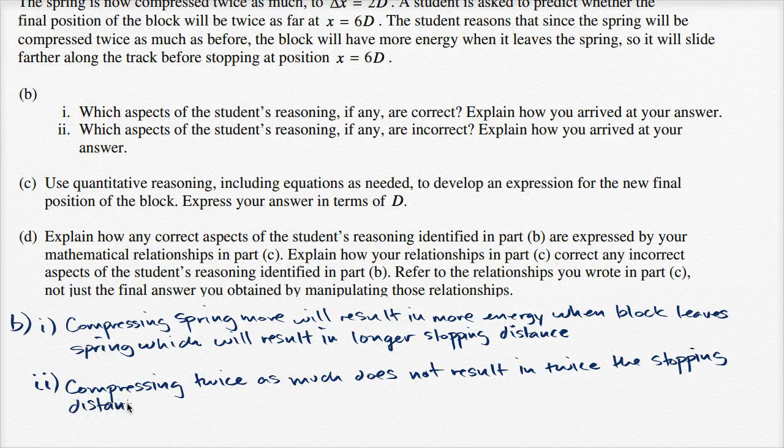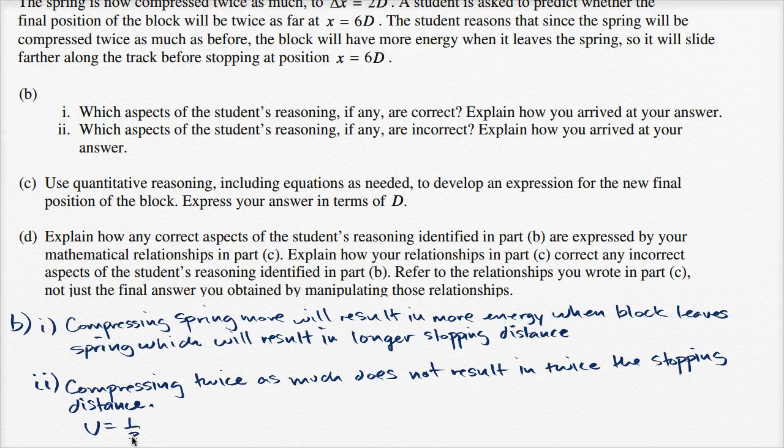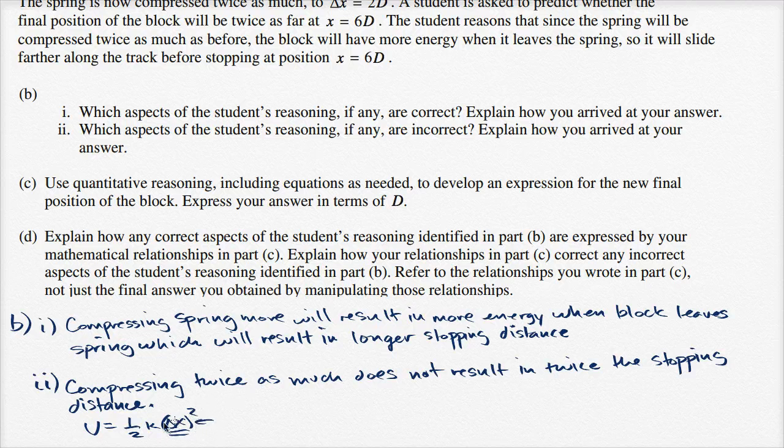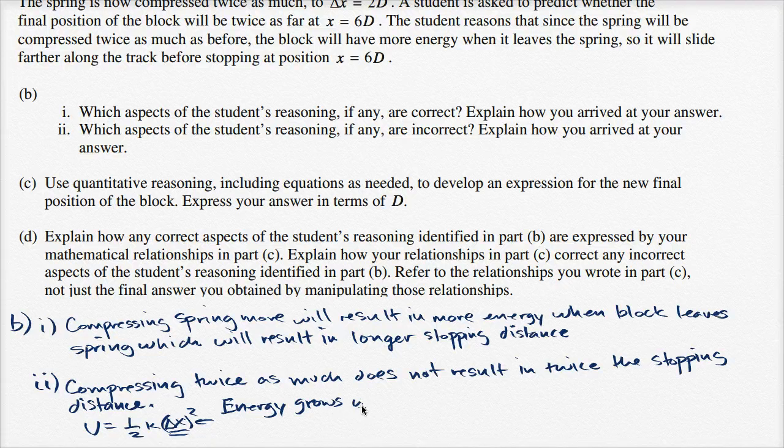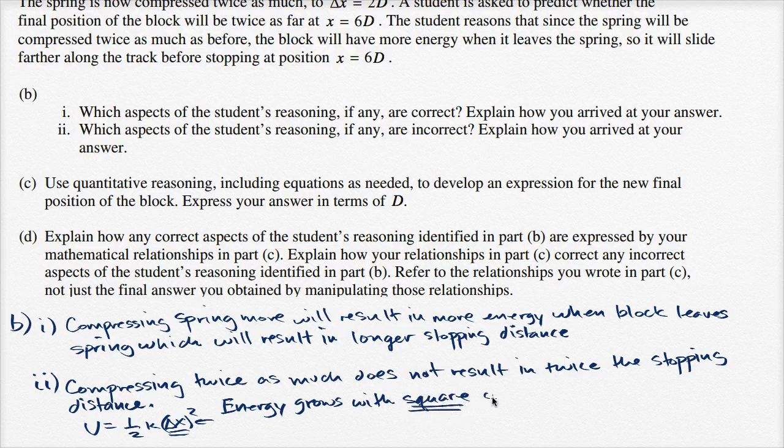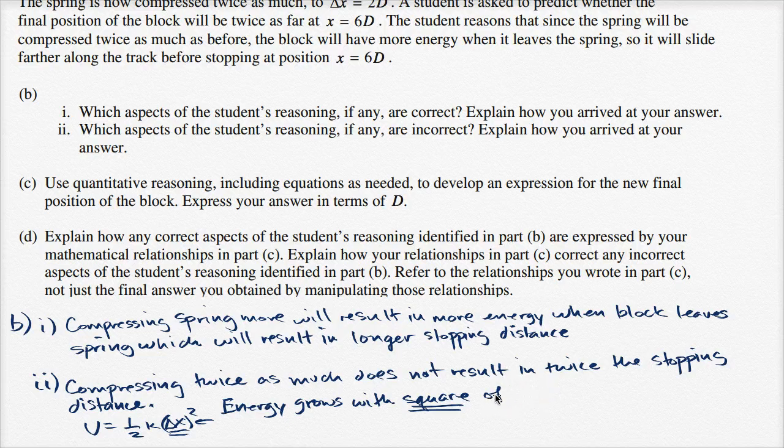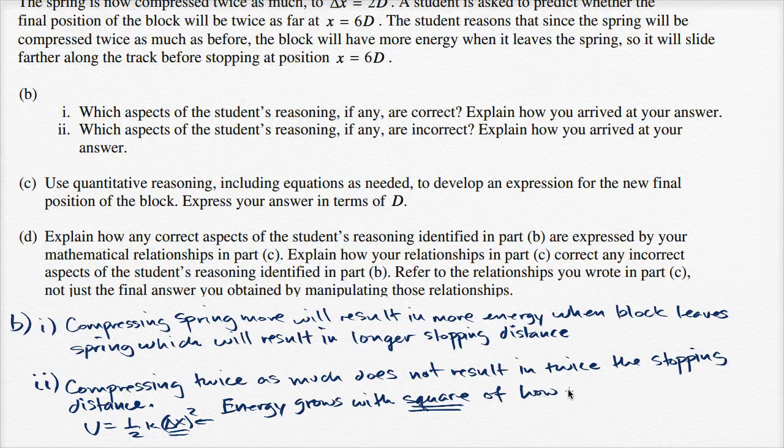And we can explain more if we like. We know that potential energy is equal to one half times the spring constant times how much we compress squared. So we can say that energy grows with the square of compression, of how much we compress.